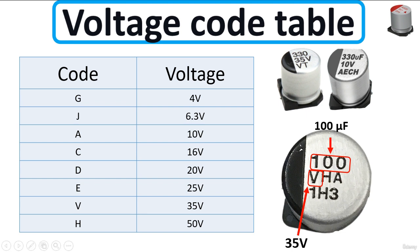As you can see here, for example, we have these two capacitors where the value of capacitance and voltage are clear and evident. And for this kind of capacitor, we have here 100 — this is clear, 100 means 100 microfarads. And here we don't have the voltage visible.